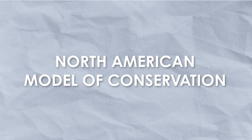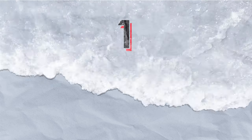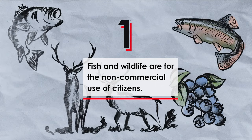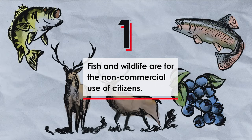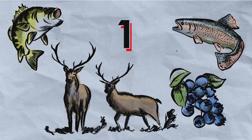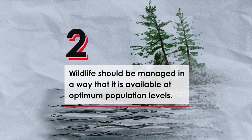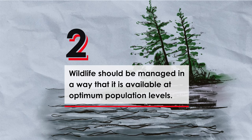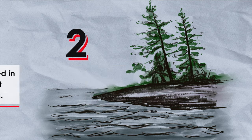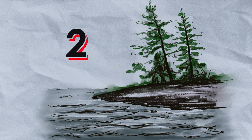The North American model of wildlife conservation rests on two basic principles: one, that fish and wildlife are for the non-commercial use of citizens, and two, that wildlife should be managed in a way that is available at optimum population levels, forever.